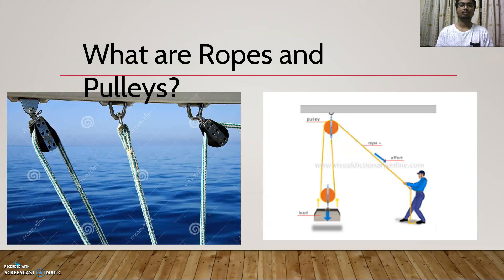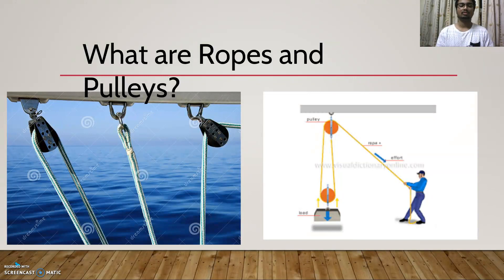What are pulleys? A pulley is a wheel on an axle or a shaft with a grooved rim around which a rope or cord passes, and which acts to change the direction or force applied to the cord, and is used to raise heavy weights.